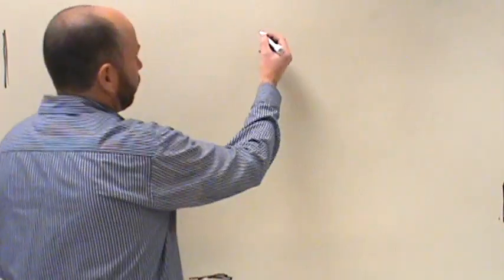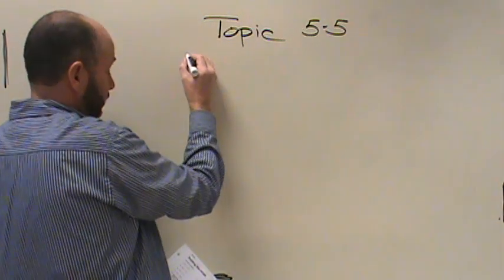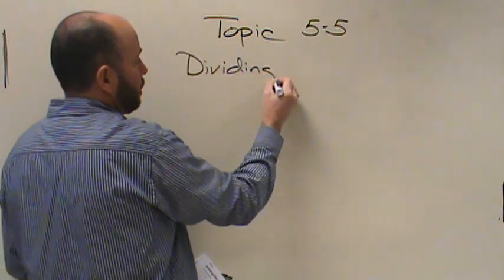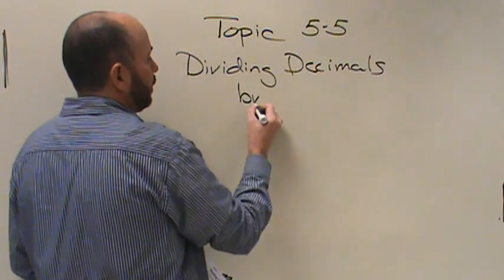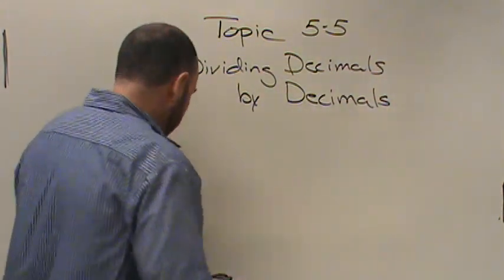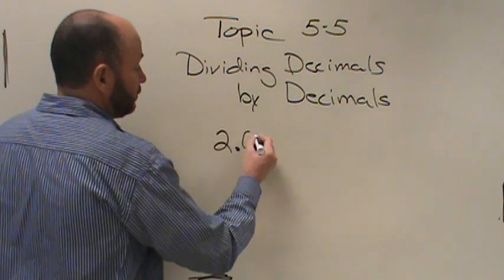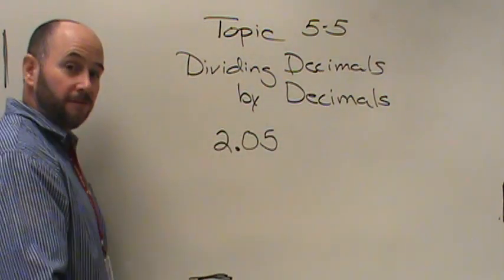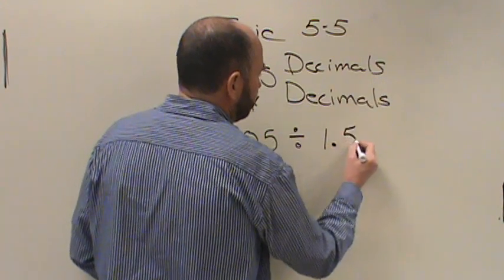Hi kids. Yesterday, or the day before, we talked about dividing decimals by whole numbers. Today we are going to work on topic 5-5, which is dividing decimals by decimals. We're going to be dividing decimals by decimals. In other words, a problem that we will look at will have something such as 2 and 5 hundredths divided by 1 and 5 tenths.